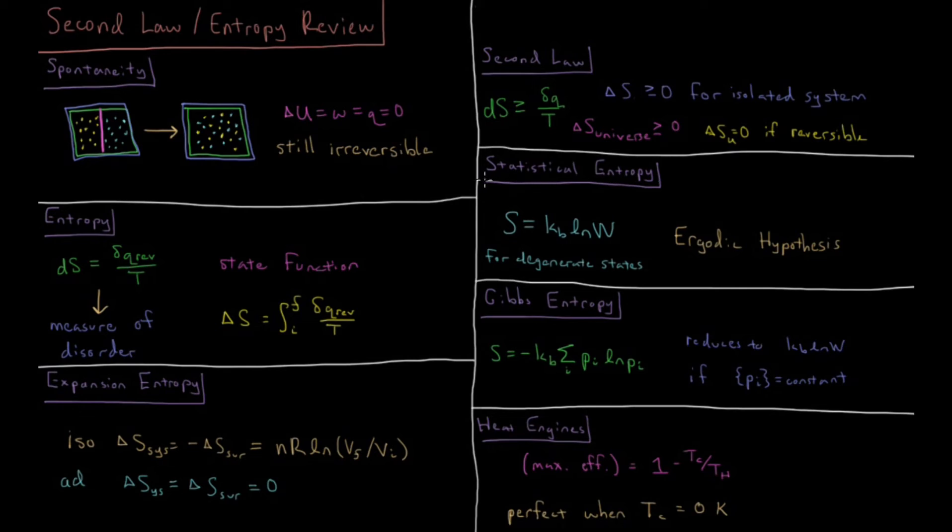You can define entropy in terms of what are called microstates in statistical mechanics. The entropy of a system is equal to the Boltzmann constant times the natural log of the number of microstates available to that system. So this is if all the states have the same given energy.